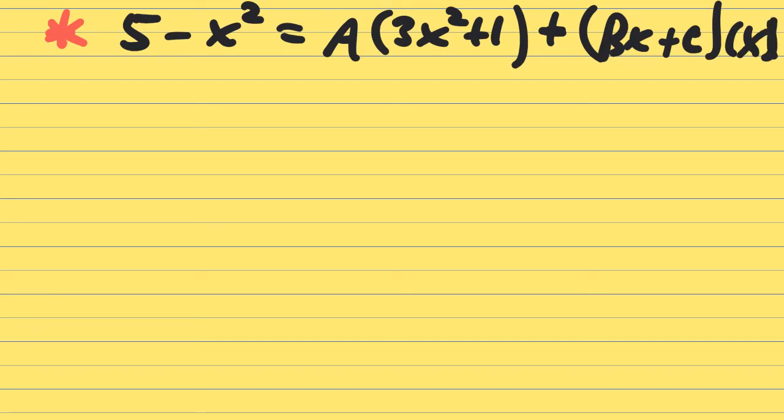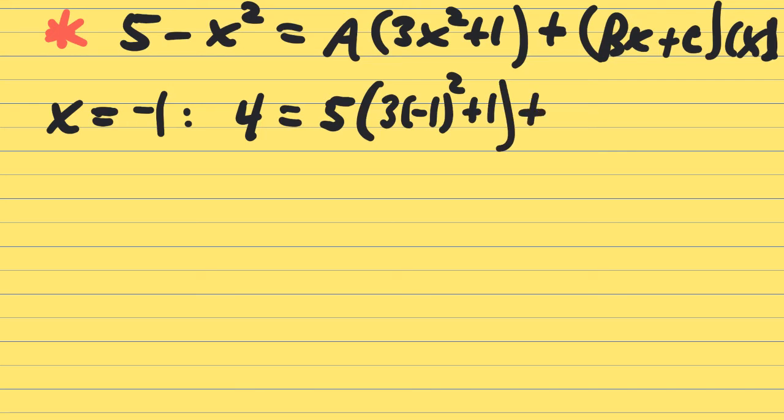As a reminder, we had five minus x squared, that was equal to a times three x squared plus one, plus bx plus c times x. And on the previous slide, we subbed in a zero, that gave us a equals five, we subbed in a one, and that took us to b plus c equals negative 16. So let's take one more value, and just to keep it simple, I'm going to pick negative one. Substituting into the equation right above, five minus negative one squared is four.